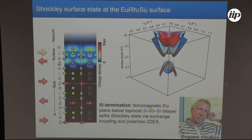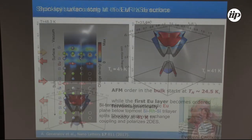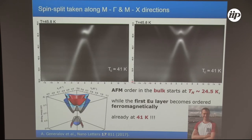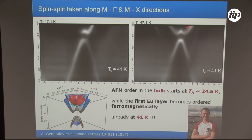DFT calculations suggest that this state lives within the top four layers of material and can couple with the europium moments, so all conditions for exchange coupling are fulfilled. Measuring the temperature dependence of the splitting to understand the onset temperature for the silicon surface, we found it occurs at a surprisingly much higher temperature than the bulk ordering. We found the onset of the splitting around 41 K.